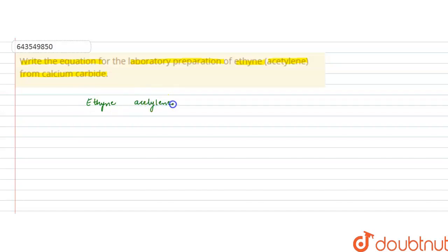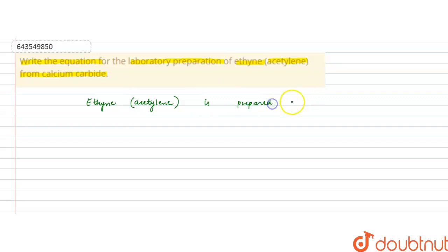Ethyne, or acetylene, is prepared from calcium carbide by its hydrolysis — that is, by the hydrolysis of calcium carbide.